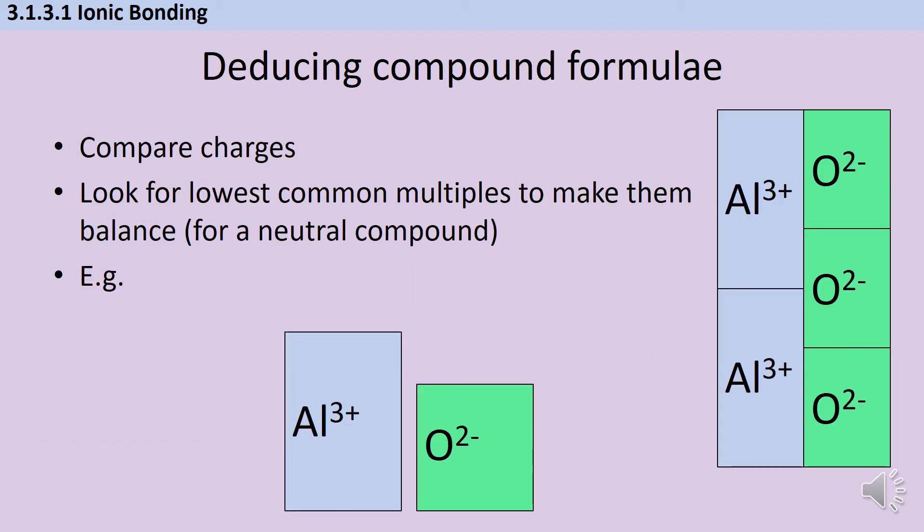Once you know ion charges, you can deduce the formula of an ionic compound. The rule is that overall the ionic compound has no charge. If you have ions with different charges, you need to balance the ratio to ensure no overall charge. Mathematically, look for lowest common multiples. For aluminium oxide, aluminium forms 3+ ions and oxygen forms oxide 2- ions. The lowest common multiple of 3 and 2 is 6, so to get 6+ I need 2 aluminium ions, and to get 6- I need 3 oxide ions. If I'm struggling, I sketch a little wall and work out how many of each brick it takes to make it balance.